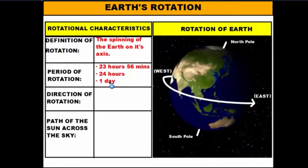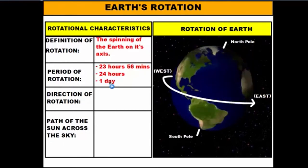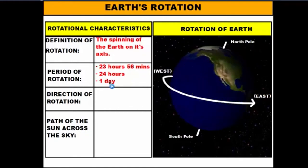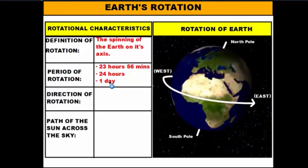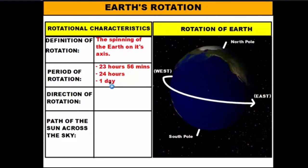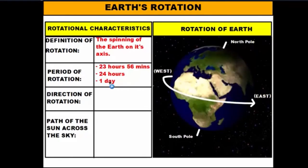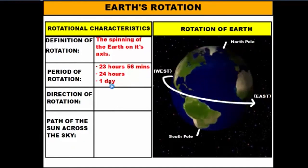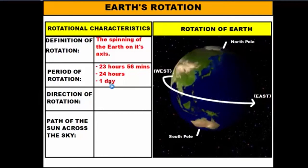So it takes the Earth one day to complete one spin. When the calendar switches over from Monday to Tuesday, the reason why it goes from Monday to Tuesday is because the beginning of Tuesday marks one complete spin of the Earth. Tuesday to Wednesday is another complete rotation, Wednesday to Thursday is another one, and the Earth will have 365 and one quarter rotations in a year.